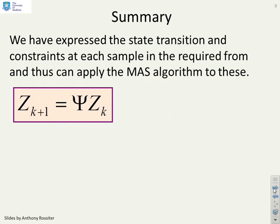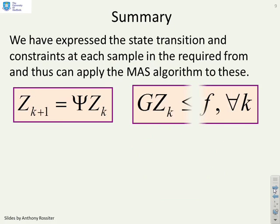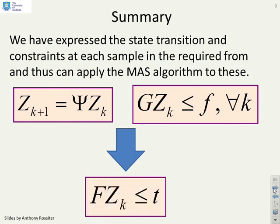So a summary. We've defined our predictions in the standard form: z_k+1 = ψz_k. We've defined our constraints in the standard form: Gz_k ≤ f at every sample. If I put those two together, I can find an MAS, or because it includes the c terms, you probably should call it an MCAS for this system.